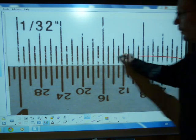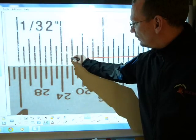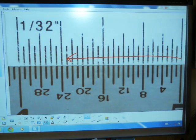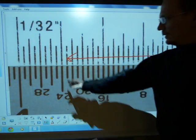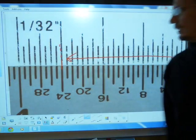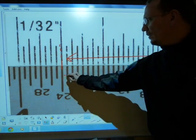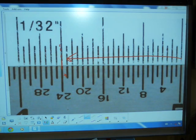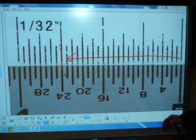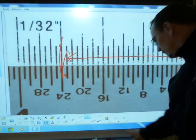If you want to determine the length of this arrow, you can see that 24/32nds is there, so one before it will be 23/32nds.